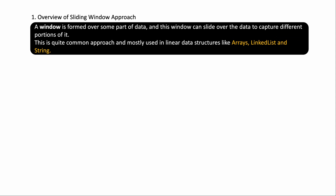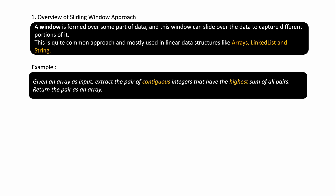A window is formed over some part of your data and this window can slide over the data to capture different portions of it. You have some linear data structure like an array, linked list, or string, and you form a window on top of that data structure. You take some data or decision out of that window, and then your window slides based on conditions given in the problem.